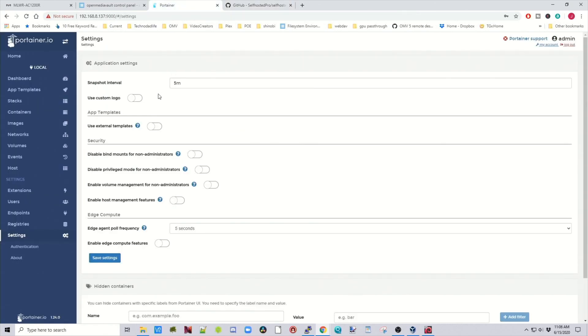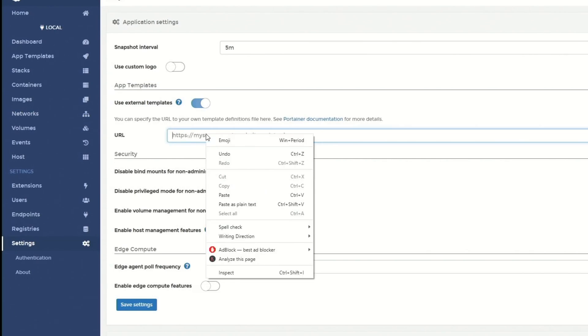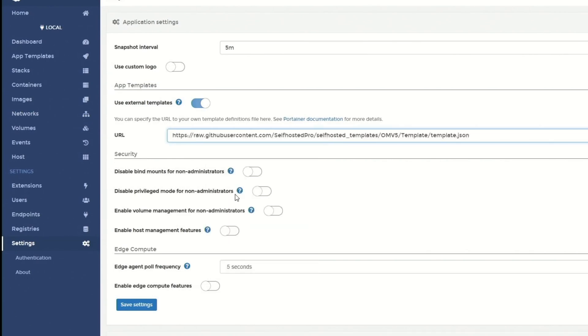Then we go back to our Settings page. And where it says Use External Templates, we're going to toggle that on. And then we're going to paste in that URL. And then click Save Settings at the bottom.